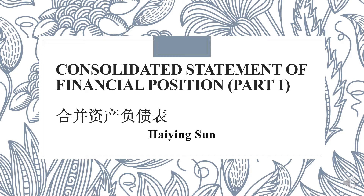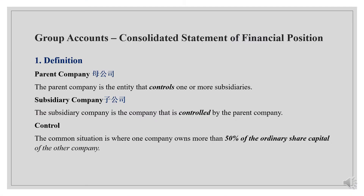In this video, I will be able to share the consolidated statement of financial position — the 合并资产负债表. First, let us understand some of the concepts. Parent company is a company — 母公司是指拥有一家或多家子公司控股权的公司. Subsidiary company (子公司) is a company that is controlled by the parent company.